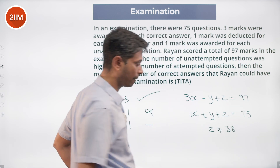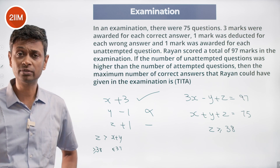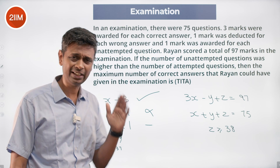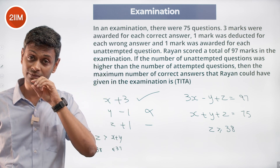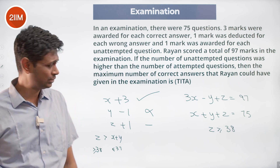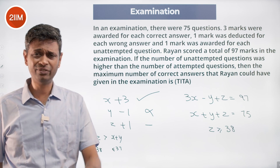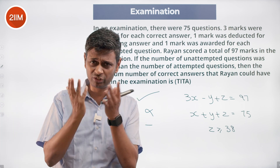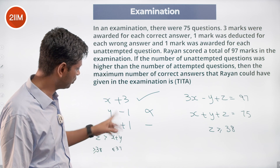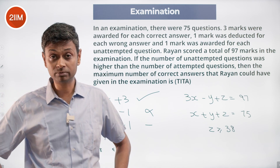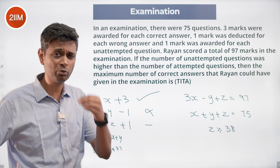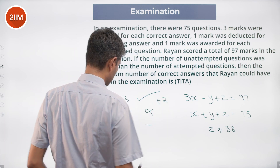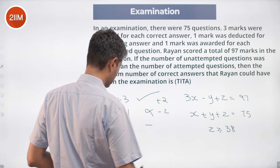Here is a beautiful way of tackling this. Generally, unattempted questions get no marks, but in our problem every question gives some mark. I'm going to remove that baseline — instead of plus 3, minus 1, plus 1, I act as a strict teacher and remove one mark from every question. So every plus 3 becomes plus 2, every minus 1 becomes minus 2, and every plus 1 (unattempted) becomes 0.